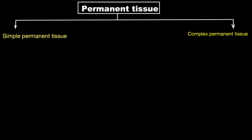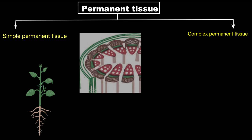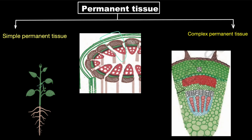If we take a plant and cut it here — a cross section of the shoot area — and look at it under the microscope, doing a very thin slice, it would look somewhat like this. If we zoom in further on a particular part, it would appear like this. A major portion of this section is made up of simple permanent tissue, and just a small part here and here is made up of complex permanent tissue. We will look into the complex parts later in the video.